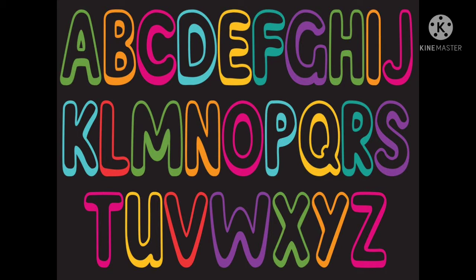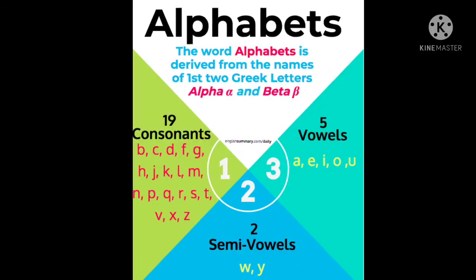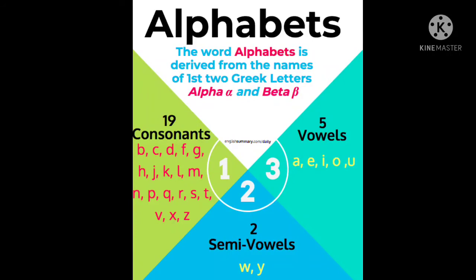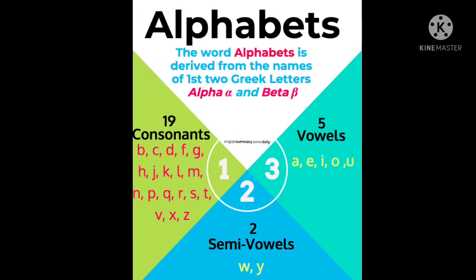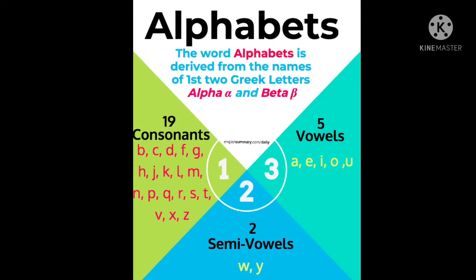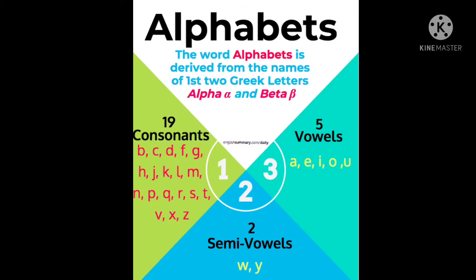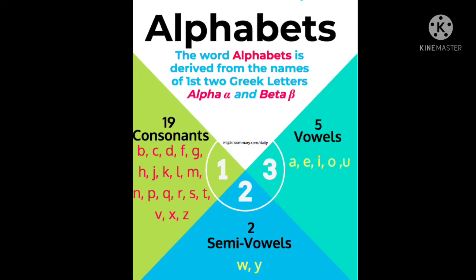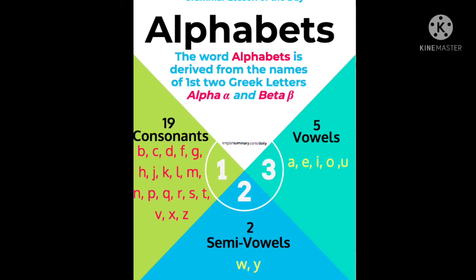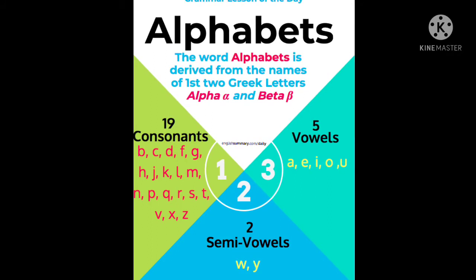As you know, there are 26 letters in the English language. These 26 letters are together called the alphabet. You can see in the picture that the 26 letters are divided into three parts: 19 consonants, 5 vowels, and 2 semi-vowels.